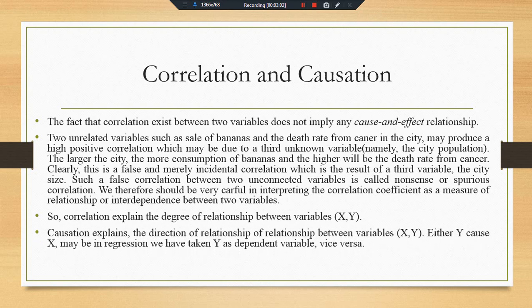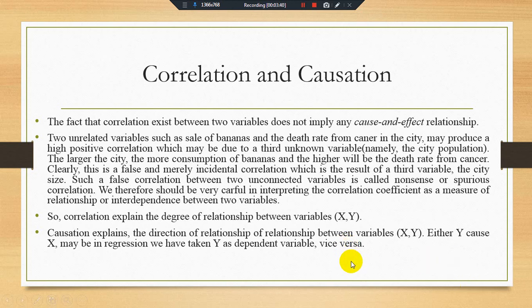Causation, on the other hand, explains the direction of the relationship between the two variables. Sometimes we use y as a dependent variable, but using the causation methodology we find that y, even though it is a dependent variable in the model, may be causing the independent variable. Causation may be bidirectional, unidirectional, or there may be no causation. But in correlation, this does not happen — correlation explains only the positive and negative degree of association between variables. For cause and effect, you have to use causation or causality methodologies.